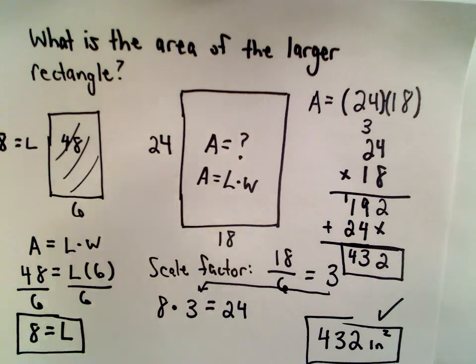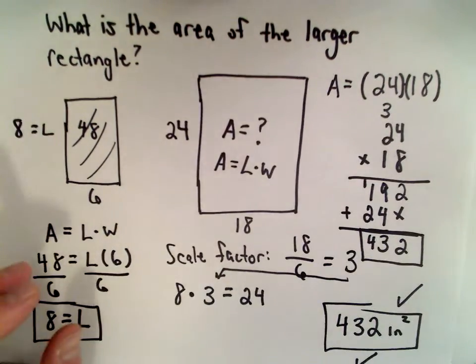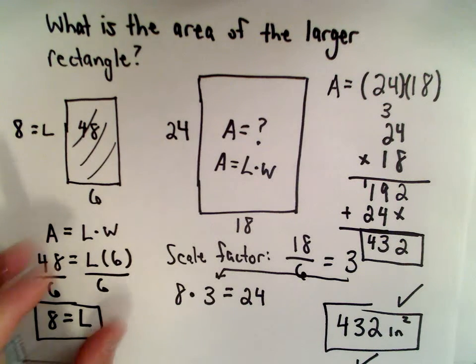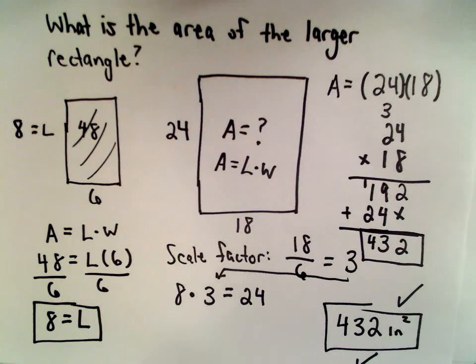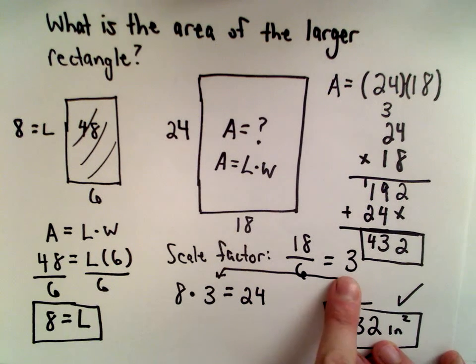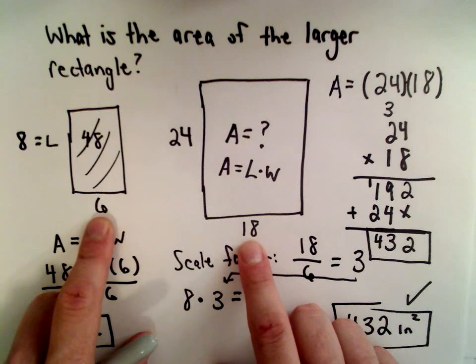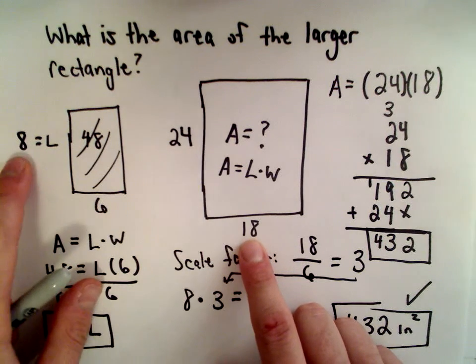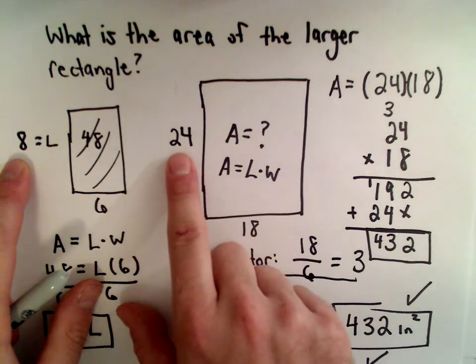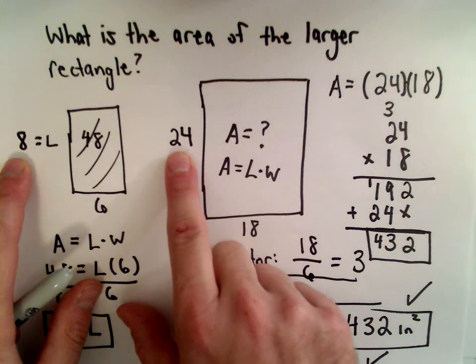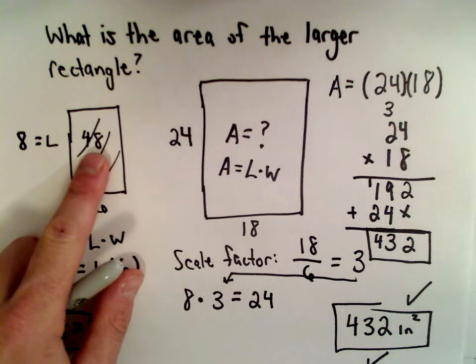And one little remark here I want to be careful. One thing to point out. It would be incorrect to say, so it's correct that our scale factor is 3. That's perfectly correct. And notice smaller side to smaller side, that goes up by a factor of 3. Larger side to larger side, that goes up by a factor of 3.